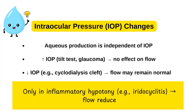Does intraocular pressure have any effect on the production of aqueous humor? Interestingly, IOP does not affect production directly. Even with high IOP in glaucoma or low IOP in a cyclodialysis cleft, aqueous production stays normal. It is only in chronic inflammation where the ciliary body shuts down that aqueous production drops, leading to hypotony.